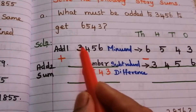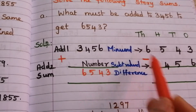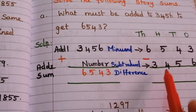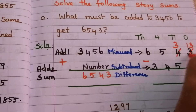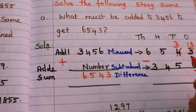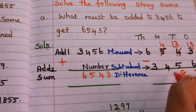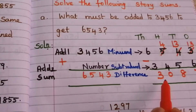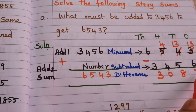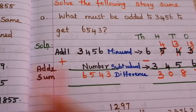So 6,543 minus 3,456. In subtraction, the first number is called minuend, the second is subtrahend, and the result is the difference. We cannot subtract 6 from 3, so borrow — 13 minus 6 = 7. Cannot subtract 5 from 3, so borrow — 13 minus 5 = 8. 4 minus 4 = 0. 6 minus 3 = 3. The answer is 3,087. So if we add 3,087 to 3,456, we get 6,543.